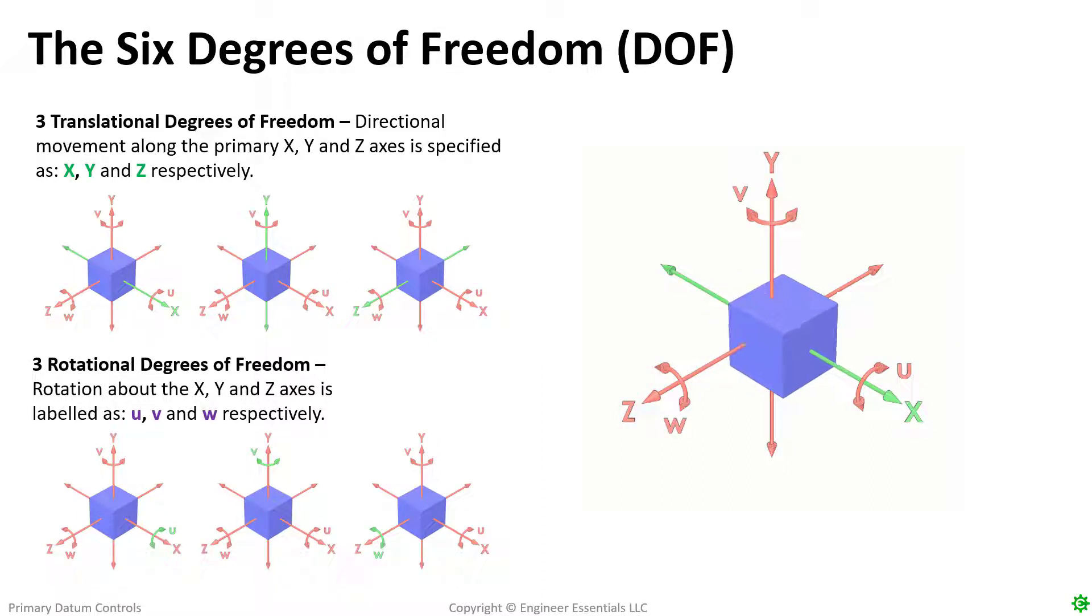As a refresher I brought in the slide that shows all six degrees of freedom that are in a coordinate system. As you can see there are three translations x, y, and z and three rotations u, v, and w. It should be noted that x and u will always be associated together as well as y to v and z to w.